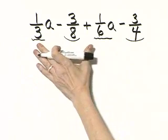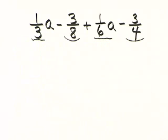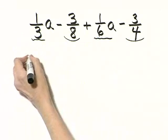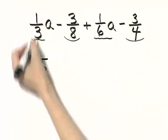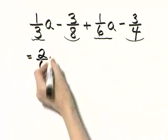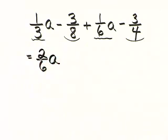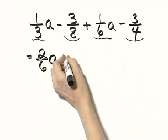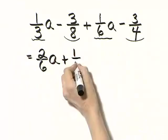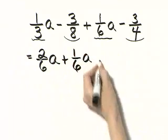So for example, for 1/3 and 1/6, we'll use the least common denominator of 6. 1/3, 3 times 2 is 6, and 1 times 2 is 2. So 1/3 A is the same as 2/6 A. Then I'll write this term next, plus 1/6 A.